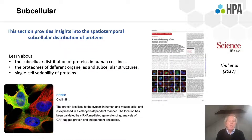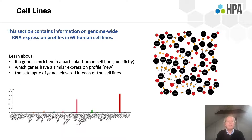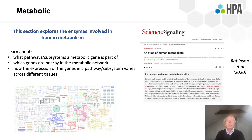The subcellular section provides insight into the spatial and temporal subcellular distribution of proteins in different cells. The cell line section contains information on expression profiles in 69 human cell lines commonly used in research, showing which genes are expressed or enriched in particular cell lines. The metabolic section explores enzymes involved in human metabolism, including the expression in tissues of different enzymatic pathways for metabolic genes.